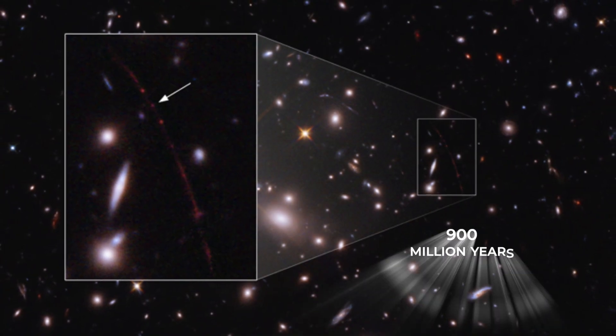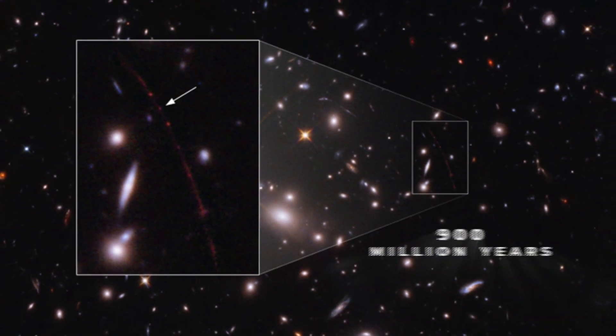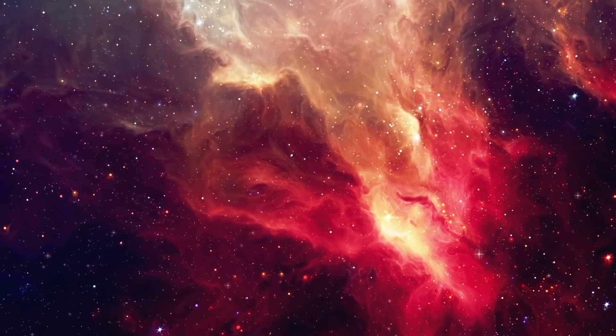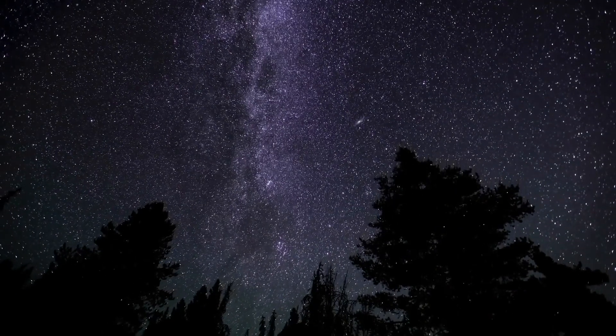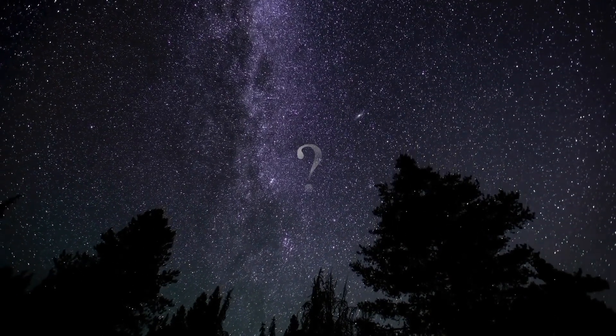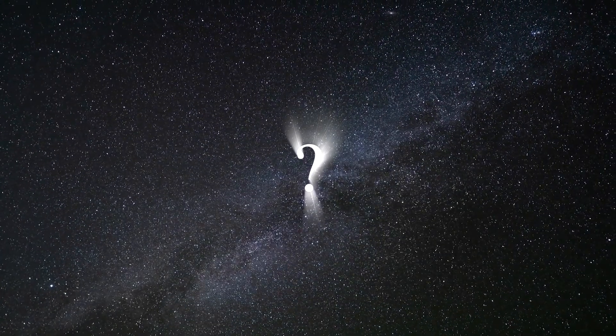The light that Hubble detected was emitted 900 million years after the Big Bang, which means it has traveled 12.9 billion years through space in order to reach us on Earth. What was the universe like all those billions of years ago when this star first ignited into existence?